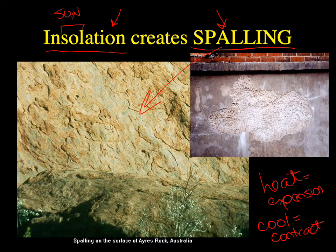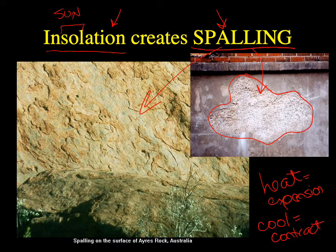You may have actually seen spalling around campus with concrete. This flaking or sheeting off of concrete is also called spalling. It can be due to insolation — that kind of expansion and contraction every day due to temperature change.